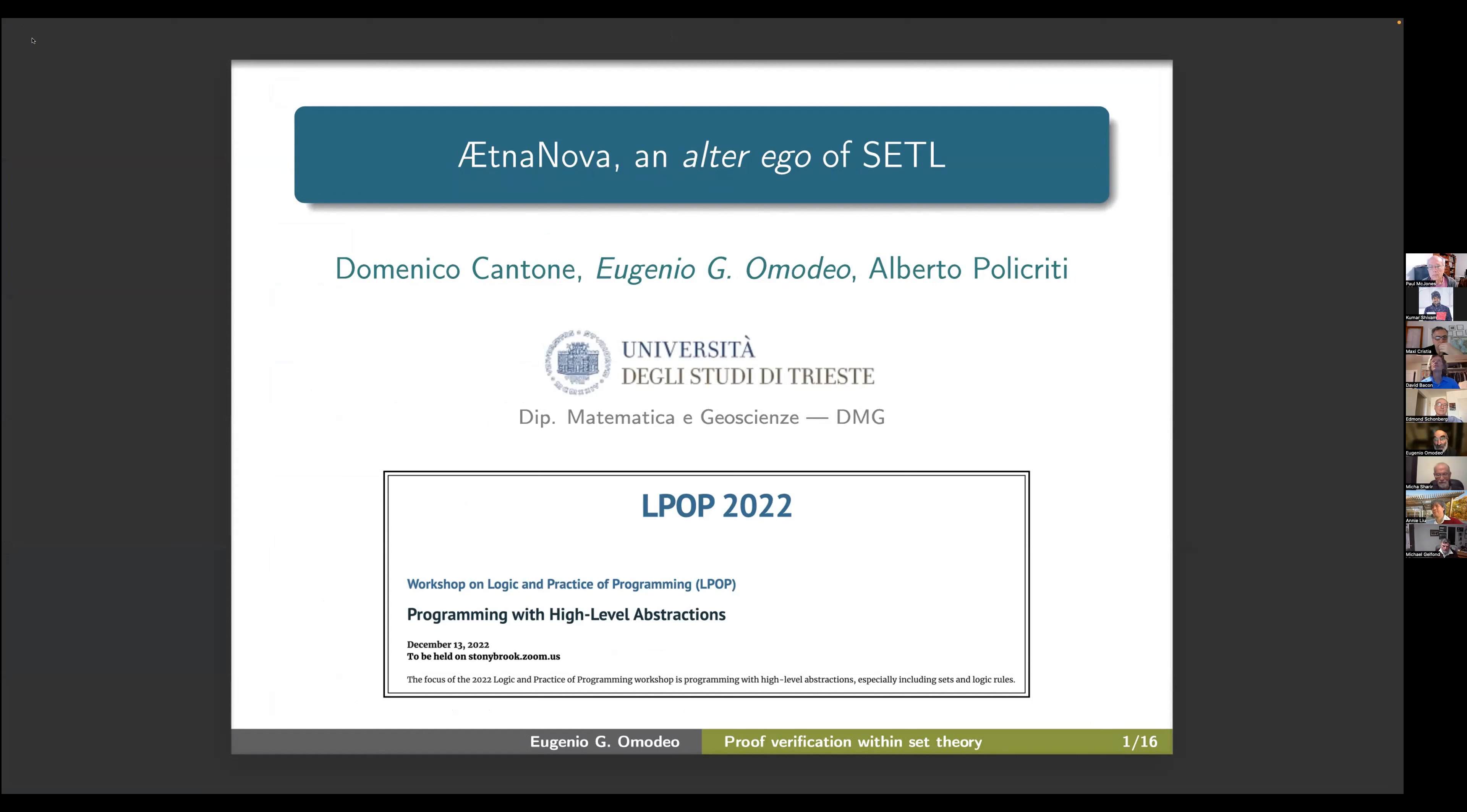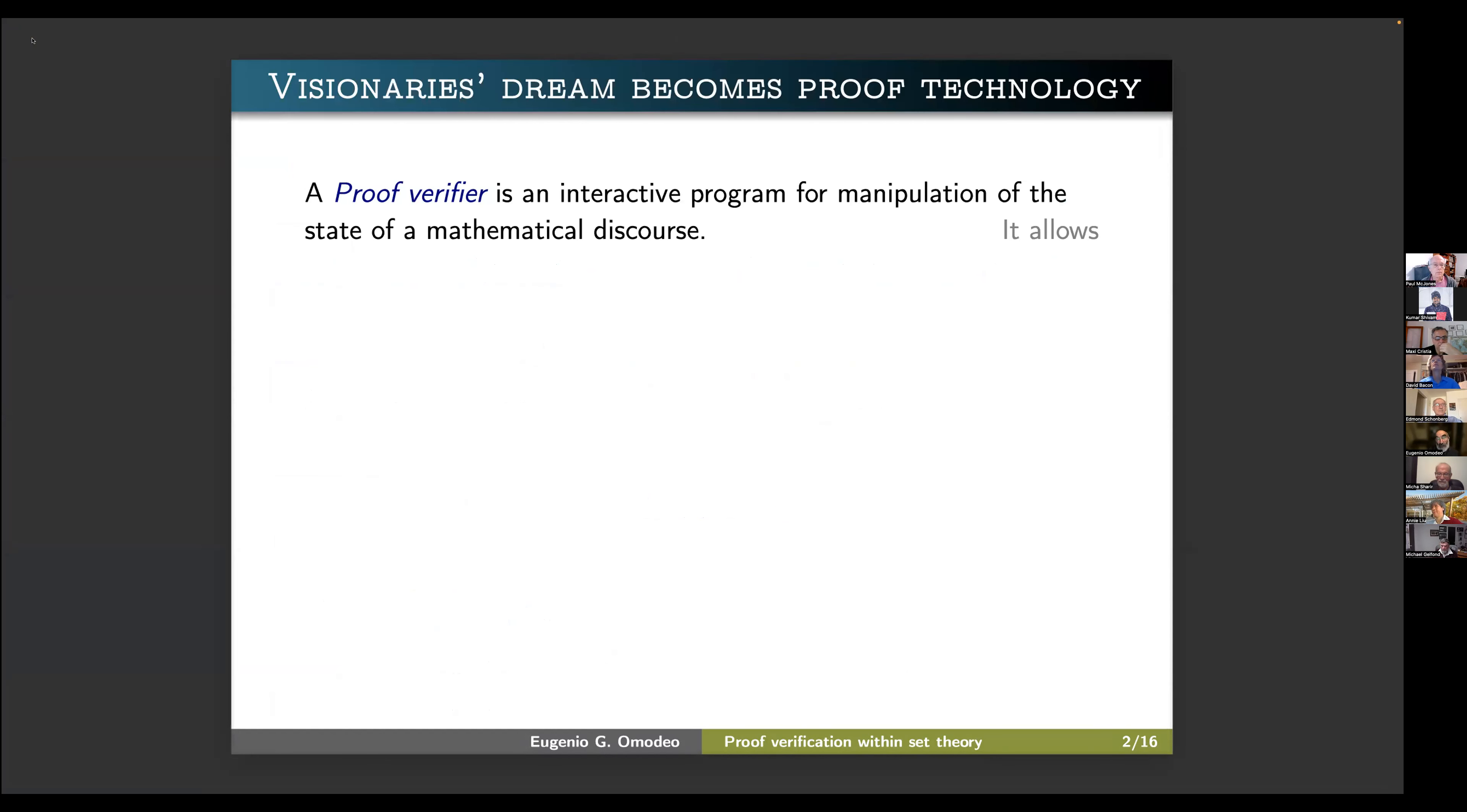So I'll talk about Etnanova, which was born from more or less from the same egg from which SETL was born. It's a proof verifier, which according to the definition given by Jack Schwartz, more than a definition, this is a characterization. It's an interactive program for manipulation of the state of mathematical discourse. It must be sound and complete, of course, otherwise it won't be acceptable.